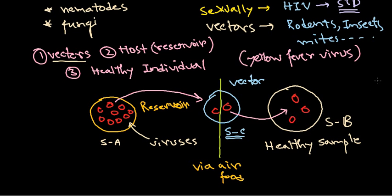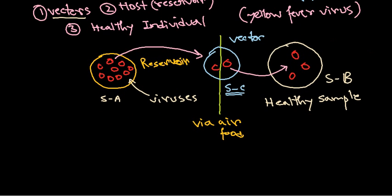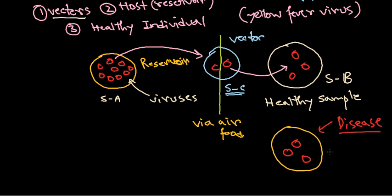It will take this inside. So this vector is getting it and then the vector will transfer this to this healthy individual. Now healthy individual after getting all this will be developed into a dangerous situation. It will get the disease. So this is the actual scheme of viral infection.